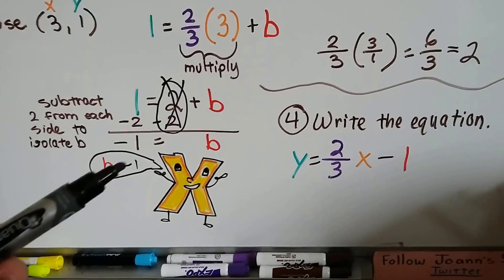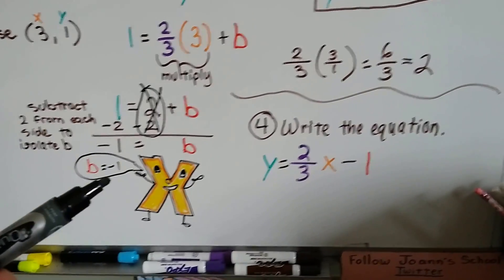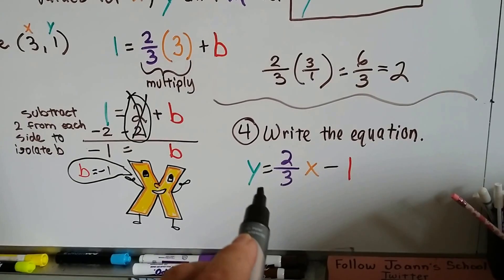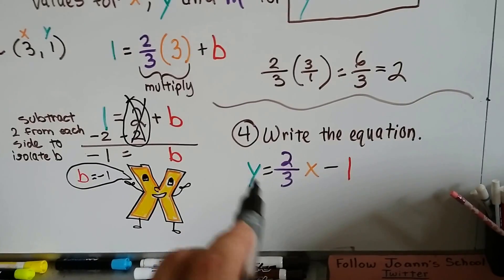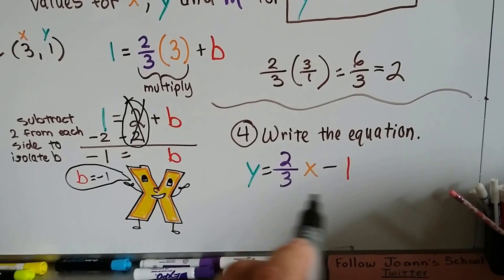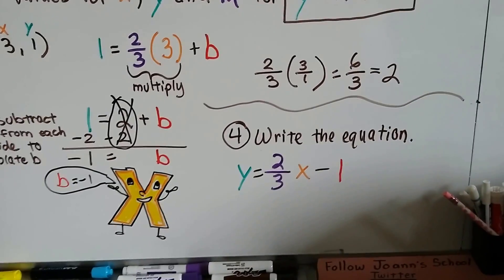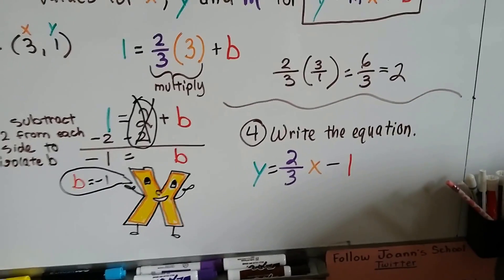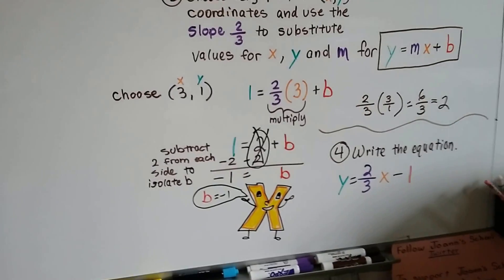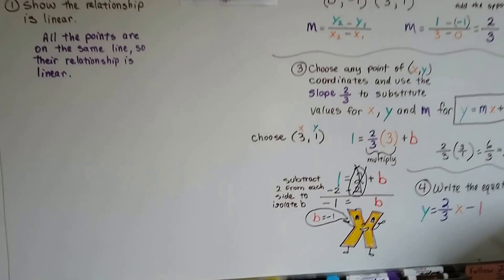So now I can use that to write the equation with the slope. We put our x and our y in for the equation. We put our 2 thirds for our slope and our minus 1 for our b for our y-intercept. We've got our equation: y equals 2 thirds x minus 1. And that is the linear relationship.